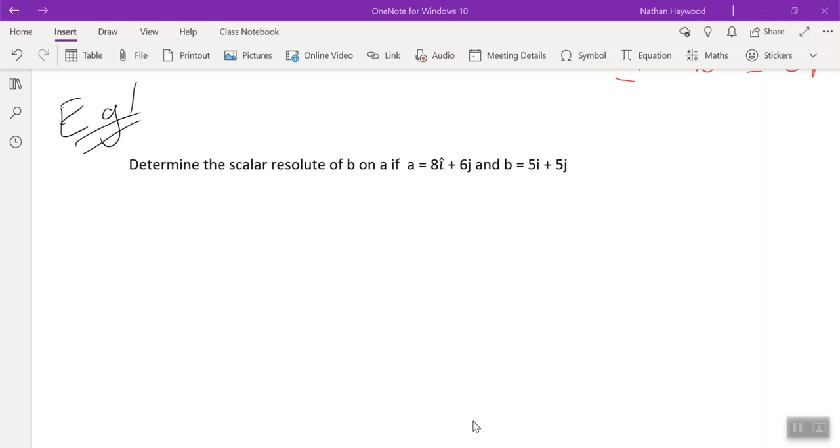So scalar resolute of B on A. What was the first step I said to do? Find the unit vector of the second vector, the thing on A.